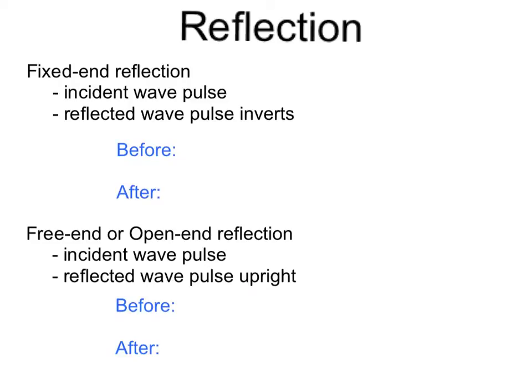Reflection. There are two types of wave reflection. The first type is fixed-end reflection. This is when an incident wave pulse travels down a string or slinky and as it's reflected at the end, the pulse inverts.